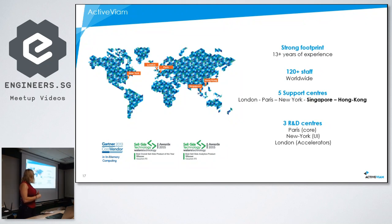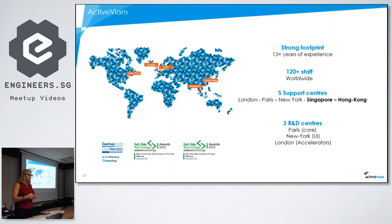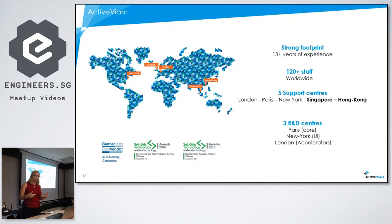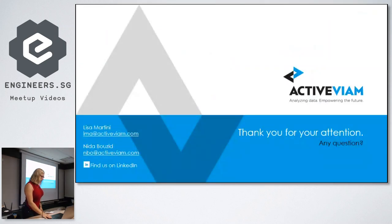Finally, who we are at ActiveVyam. We've been around for more than 13 years, we are more than 120 worldwide, and we have five centers: New York, London, Paris, Hong Kong, and Singapore. If you have any questions about the company, or are facing aggregation challenges or use cases, feel free to contact us at our office on Amoy Street. Thank you for your attention, and we're here for your questions.